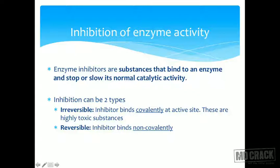Inhibition can be of two types: irreversible or reversible. Irreversible means the inhibitor binds covalently at the active site. I am emphasizing the word covalently. These are highly toxic substances and that is why they lead to irreversible enzyme inhibition. For reversible enzyme inhibition, the inhibitor binds non-covalently — that is the main difference. Enzyme inhibition can also be classified based on two important characteristics: where the inhibitor binds and where the substrate binds.